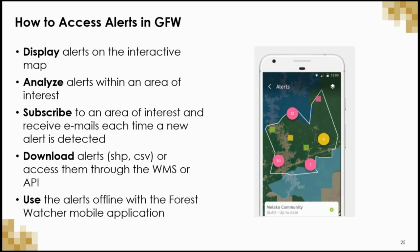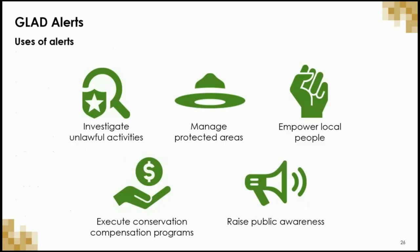GFW has also created a Forest Watcher mobile app that allows the use of alerts offline. GLAD alerts can be used to investigate unlawful activities, manage protected areas through effective monitoring, empower local people by improving transparency about where illegal activities are taking place, facilitate conservation compensation programs as checks and balances, and raise public awareness about what is occurring on the ground.